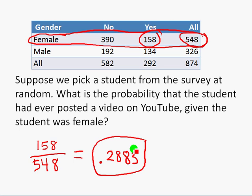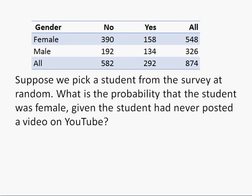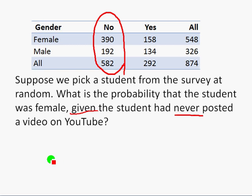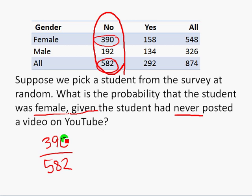That's the probability the student had ever posted a video on YouTube, given that the student was female. One last question: we pick a student at random from the survey and find the probability the student was female, given that the student had never posted a video on YouTube. The 'given never posted' means we work with the no column — 582 respondents. Out of those 582, there were 390 female students. So the probability is 390 out of 582, which as a decimal is 0.6701 — actually pretty close to two-thirds.